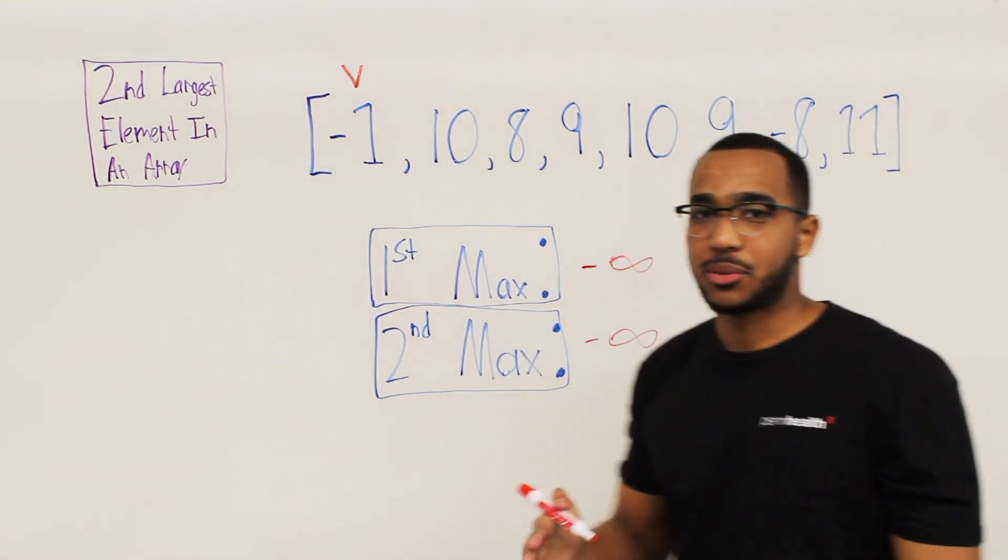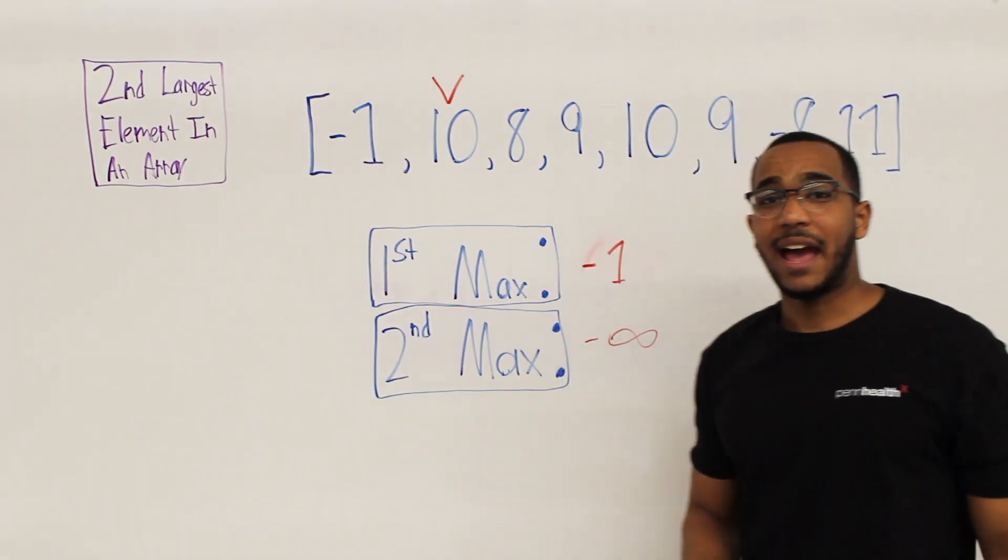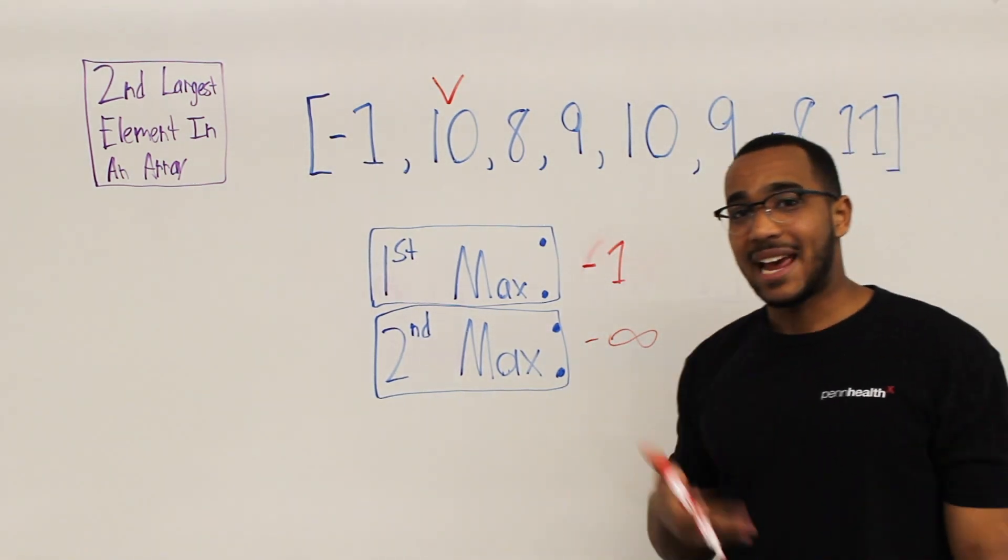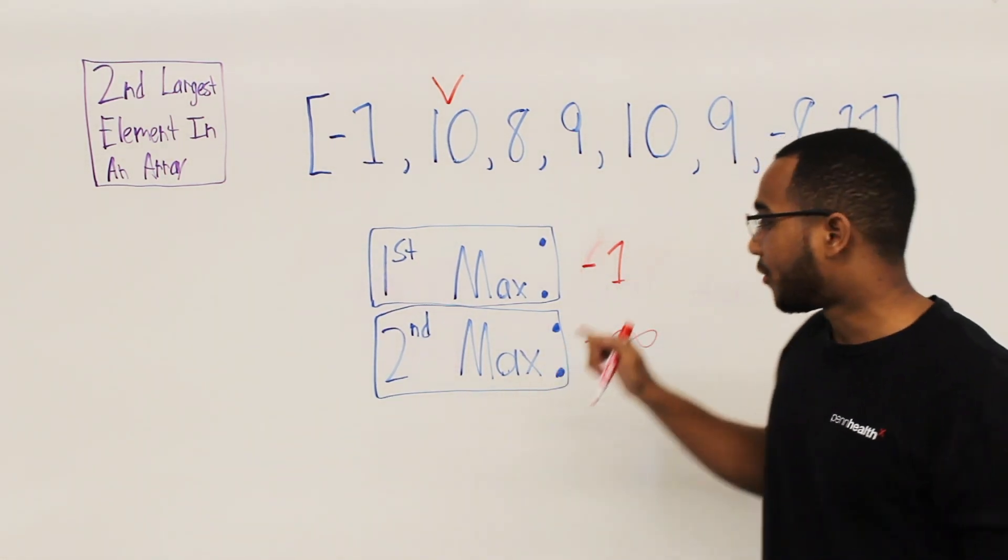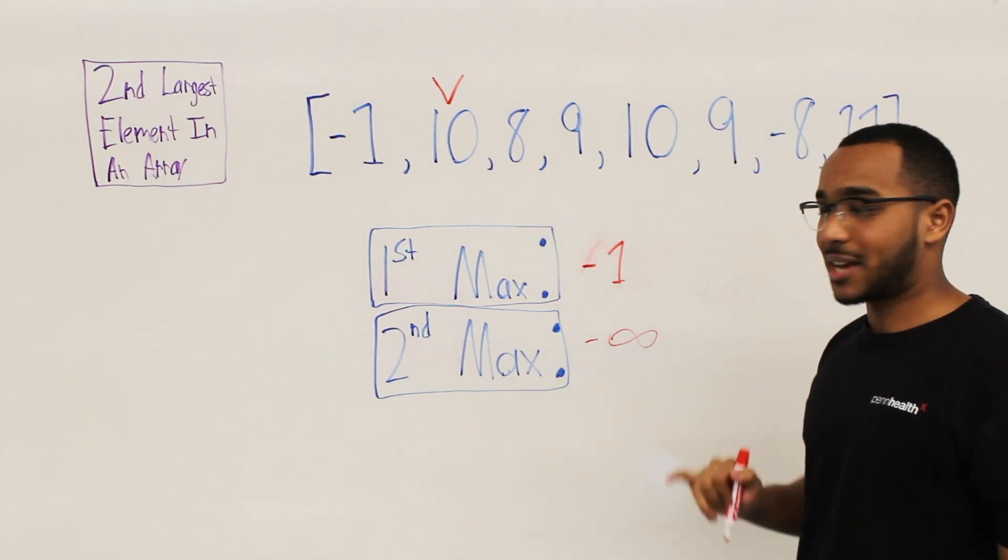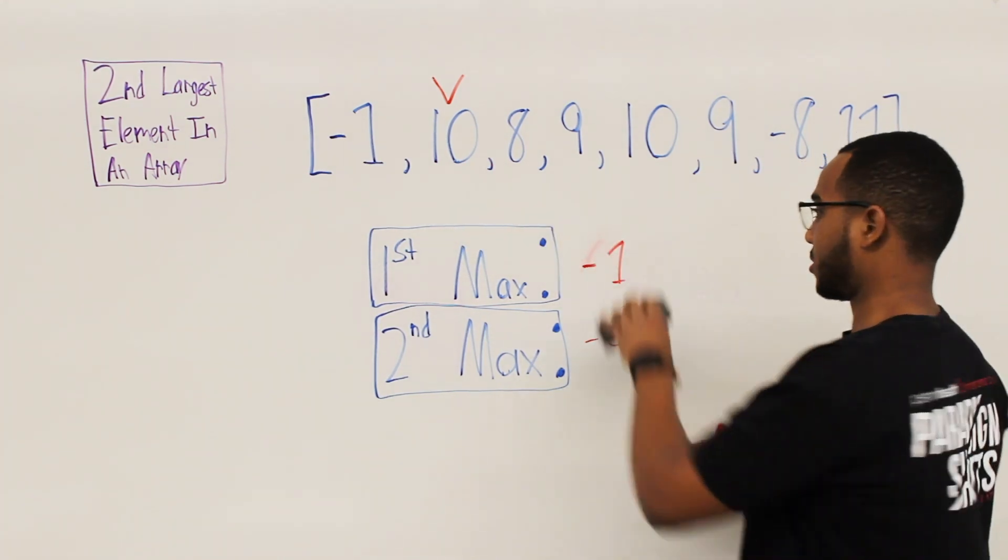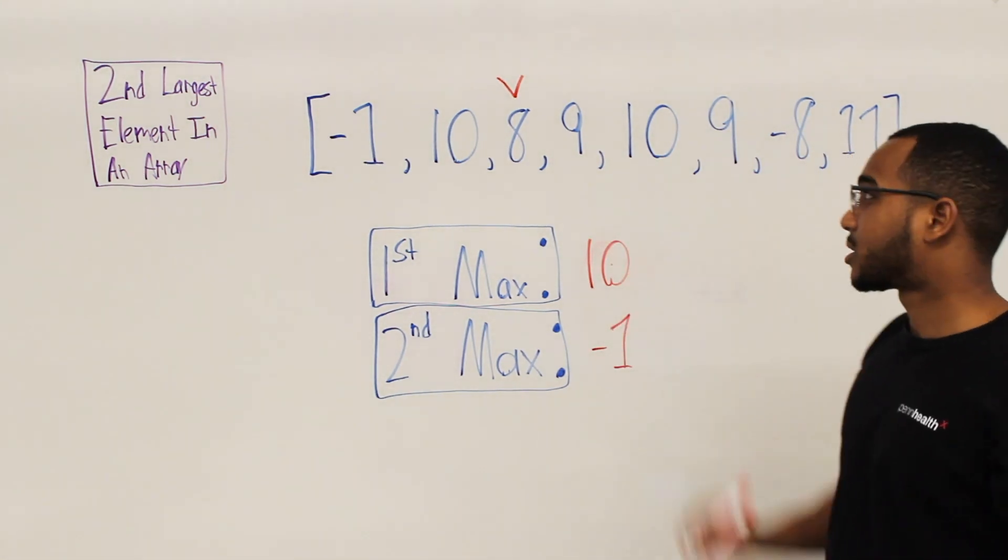So what we do is we say, does this item beat the first maximum? Yes, it does. Negative one is now our first max item. And now we look at 10. Does 10 beat our first maximum item? Yes, it does. So what happens is our first maximum becomes our second maximum and the 10 becomes our first maximum. So now this is what happens. So all we did was move down the negative one and now 10 is our first maximum item.